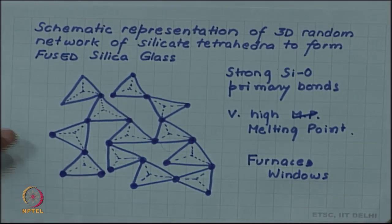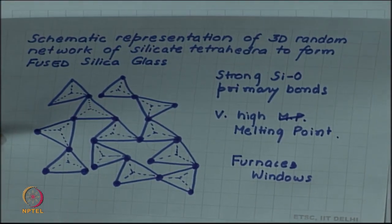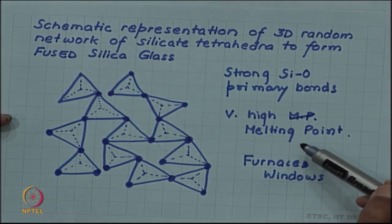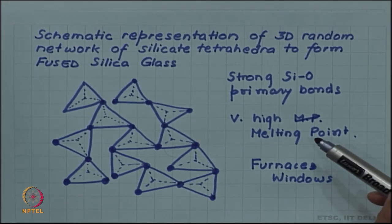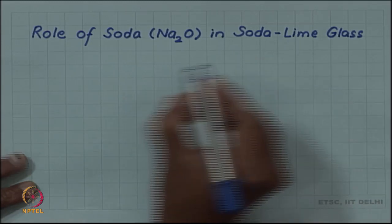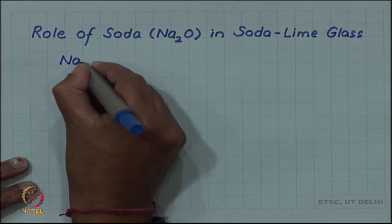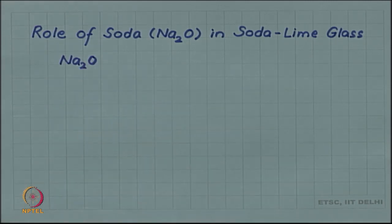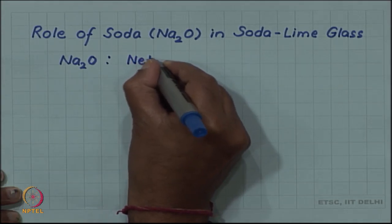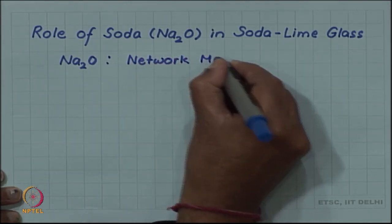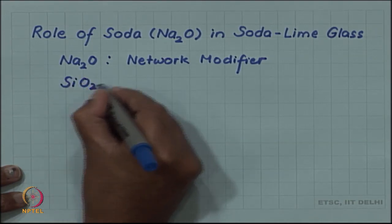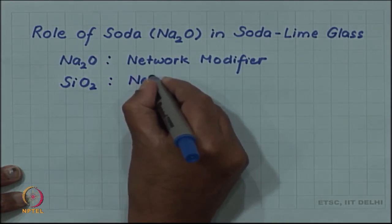For ordinary home windows we would not use fused silica glass, mainly because of cost. To reduce the cost — essentially to reduce the melting point, since cost comes from processing glass at high temperature — some additives are added. A commonly known glass is soda lime glass. This soda lime glass contains the additive soda, Na2O, which has an important role in modifying the structure of the glass, and that is why Na2O is called a network modifier, whereas silica is called the network former.